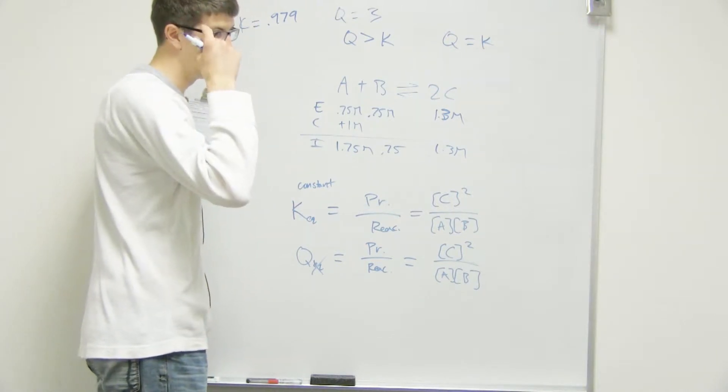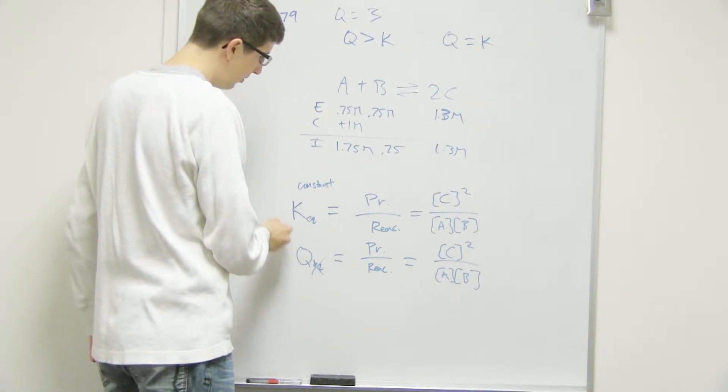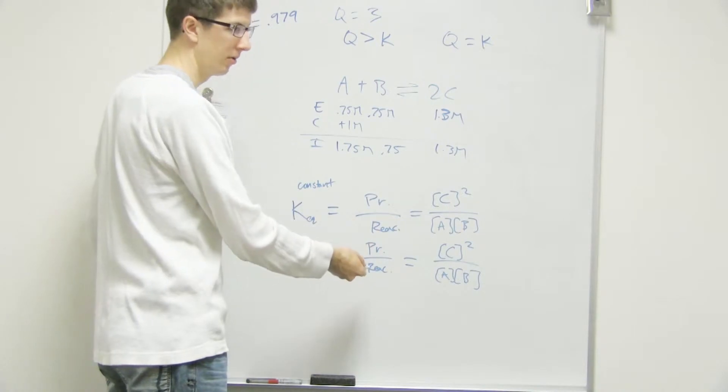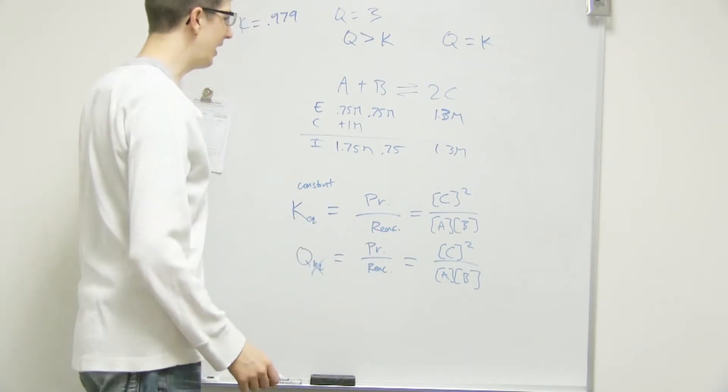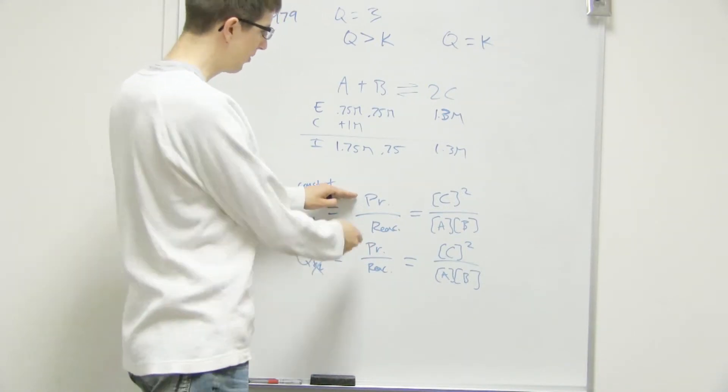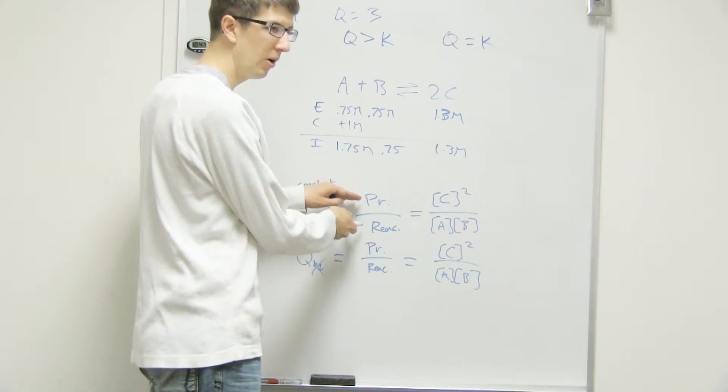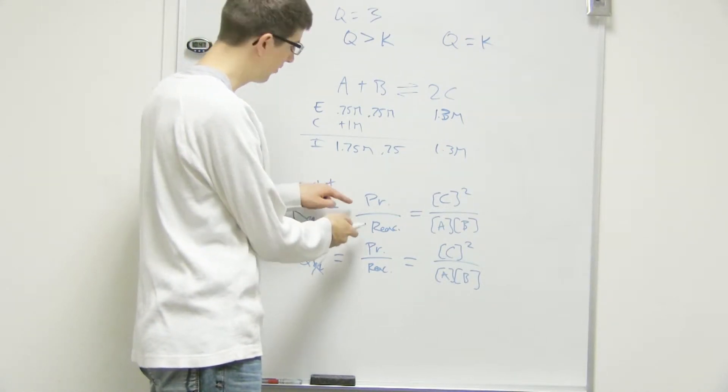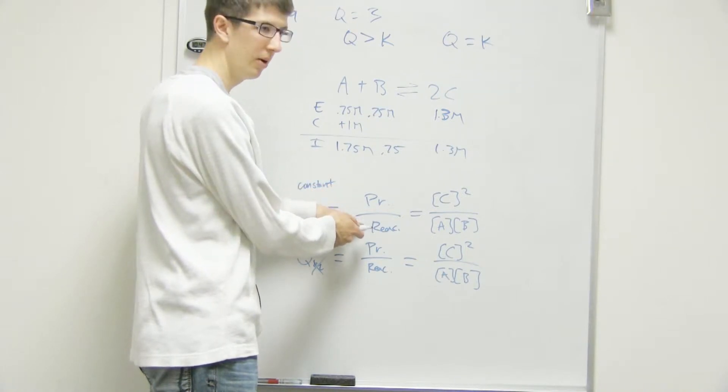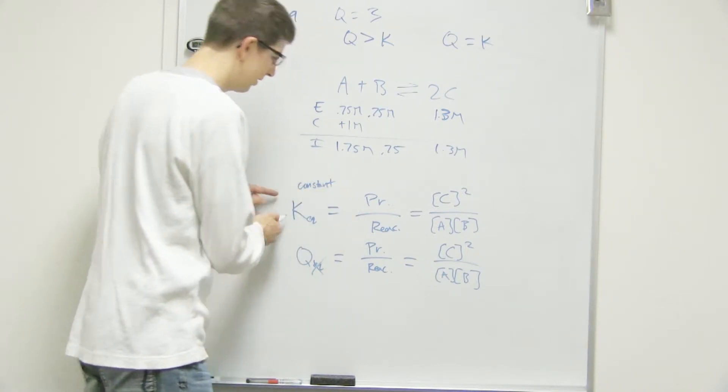Yeah. So that's how I like to think of it most of all. Because when we think of Q and K, it represents products over reactants. If we have a lot more products than reactants, is this number going to be bigger or smaller? So if we have a big number on bottom, small number on bottom. Bigger. It will be a big number, right?